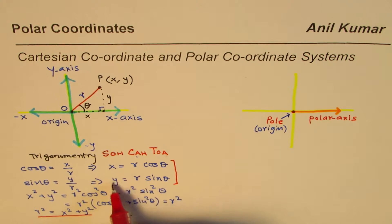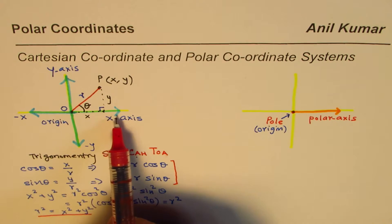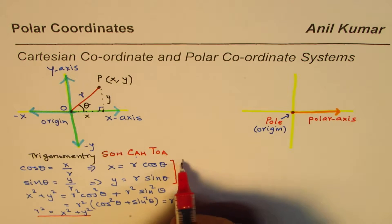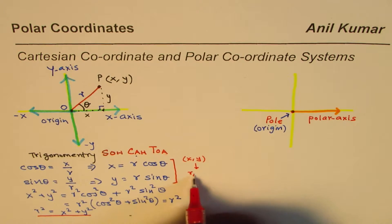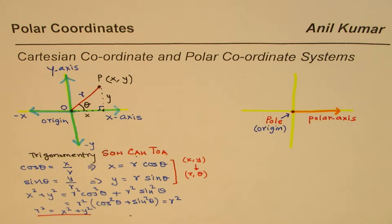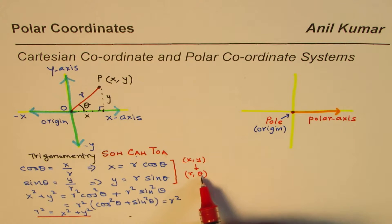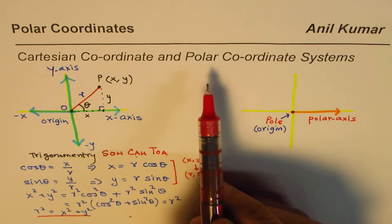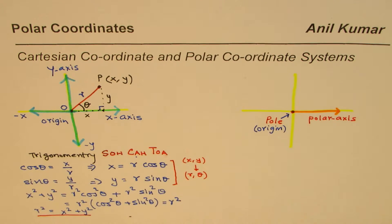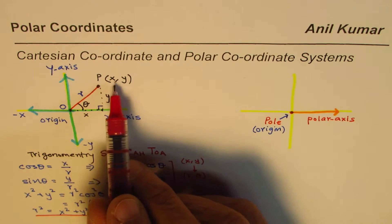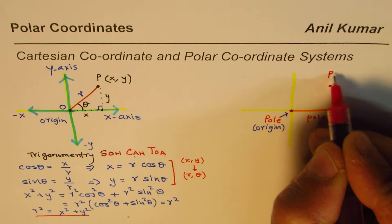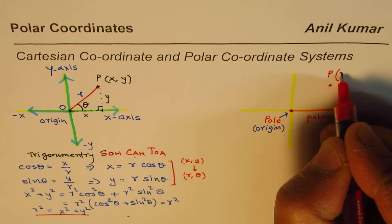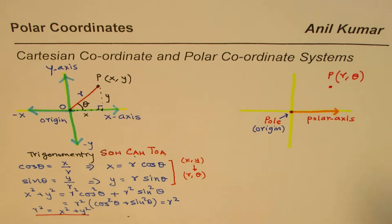We have converted x and y — two independent parameters — into r and theta. When we convert x and y to r and theta, we can plot points in terms of r and theta as well. The same point can be plotted on a different system — the polar coordinate system. In polar coordinates, the point P is written as (r, θ) instead of (x, y).